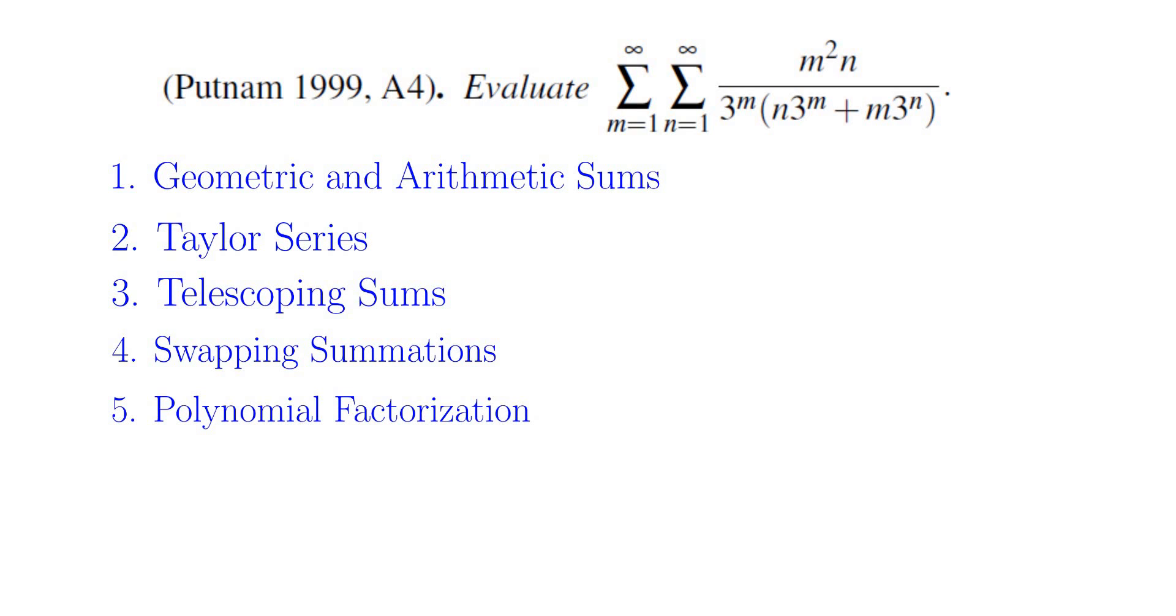Swapping summations seems to be reasonable since it's a double sum, so you might be able to swap the summations. And polynomial factorization doesn't seem to be helpful because that is typically done for products of finitely many terms.